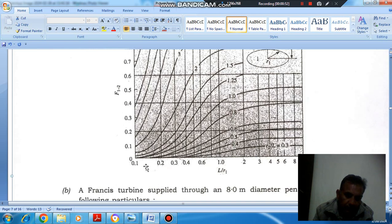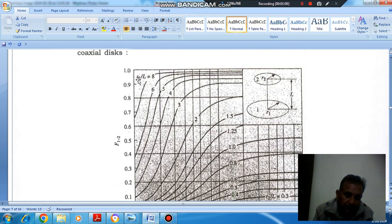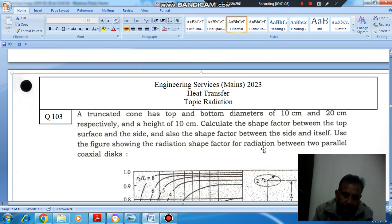This figure, the horizontal axis is representing L by R1 and vertical axis is representing F12. And these lines are corresponded to R2 by L. R2 by L is 5, 6, 5, 4, 3. Now, it is given that the top diameter is 10 cm and bottom diameter is 20 cm.